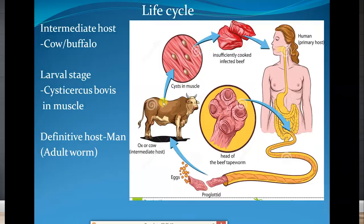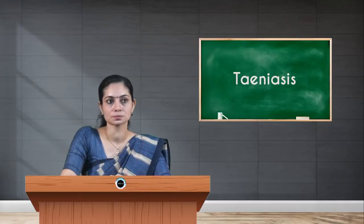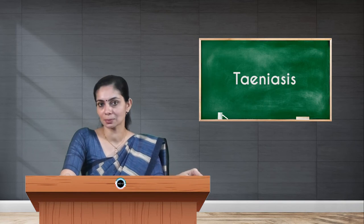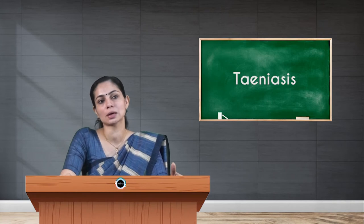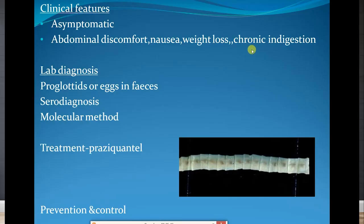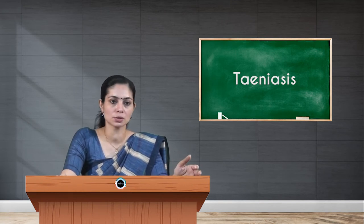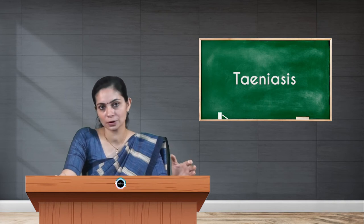This infection is very common in people who take beef. For clinical features, most patients are asymptomatic, but some complain of abdominal discomfort, nausea, weight loss, and chronic indigestion. Diagnosis is usually by demonstration of proglottids in fecal matter, done macroscopically or microscopically by stool examination, which shows the presence of bile-stained spherical eggs. Other methods include sero-diagnosis for antigen or antibody detection, and molecular methods such as PCR. Treatment is usually given by praziquantel. Prevention includes personal hygiene and adequate cooking of beef.